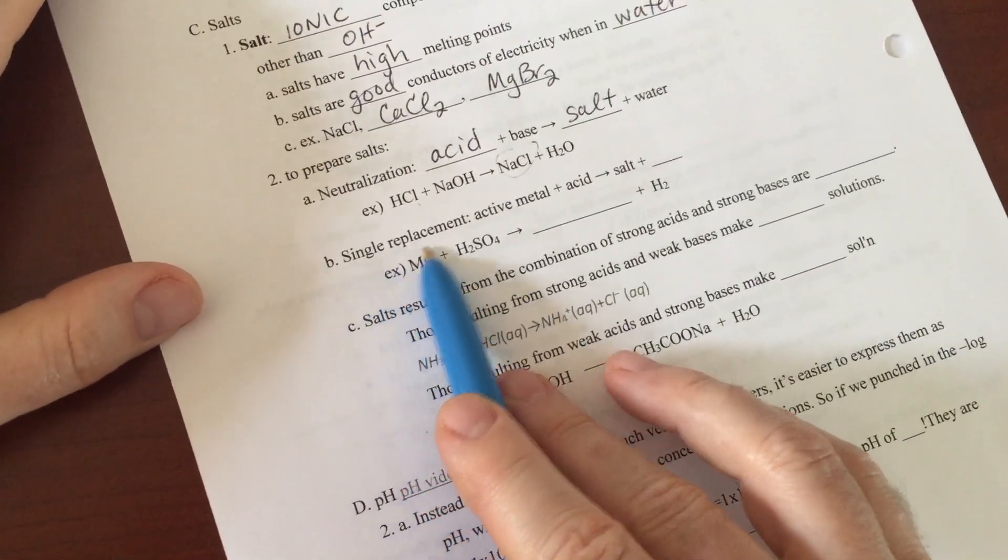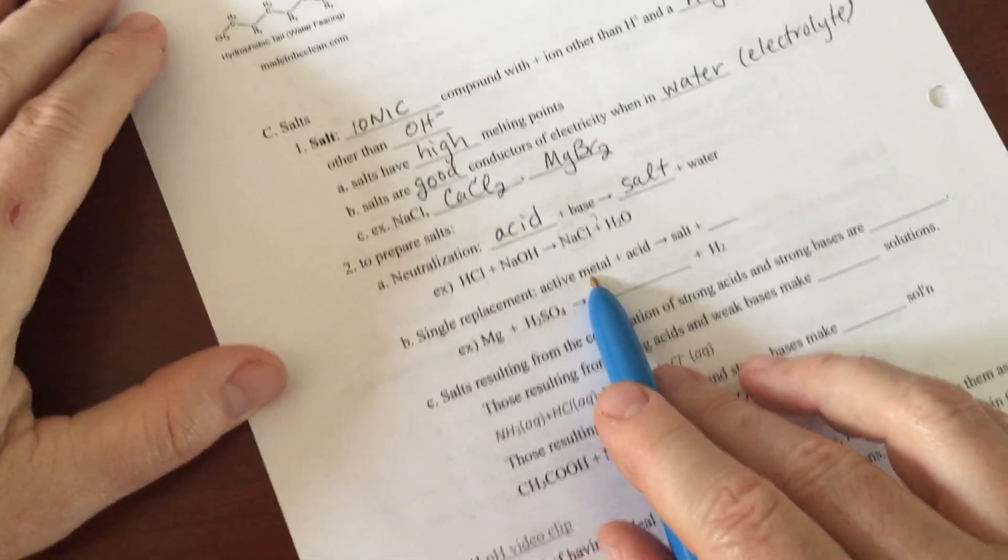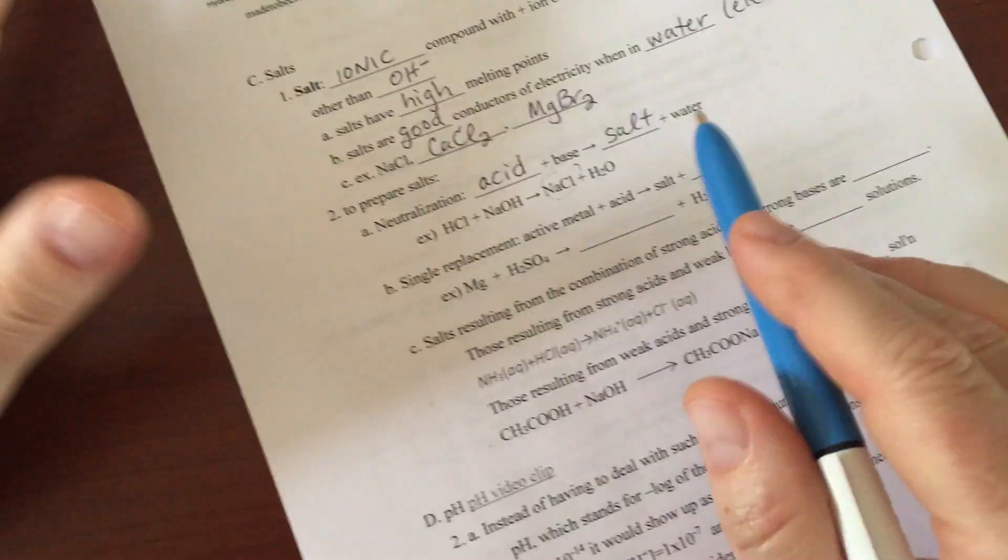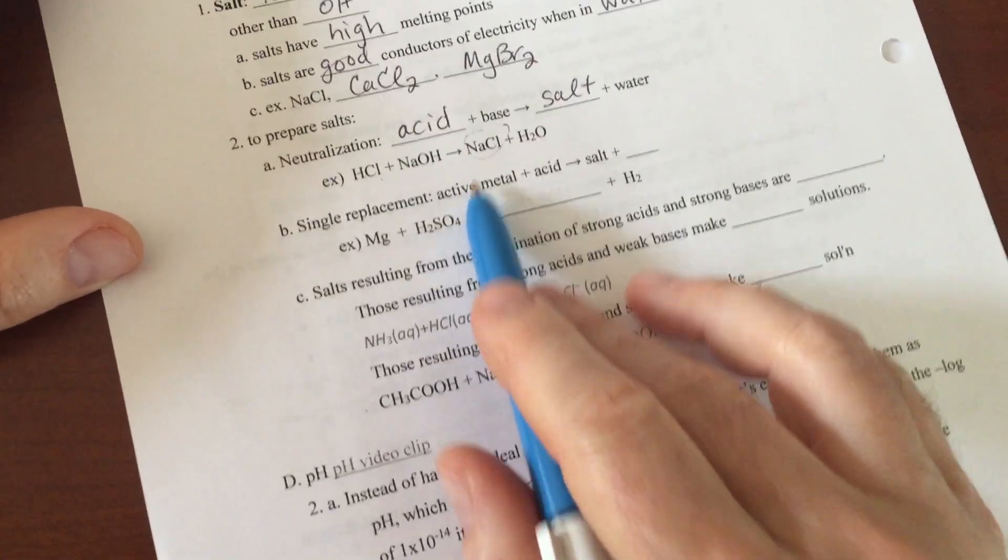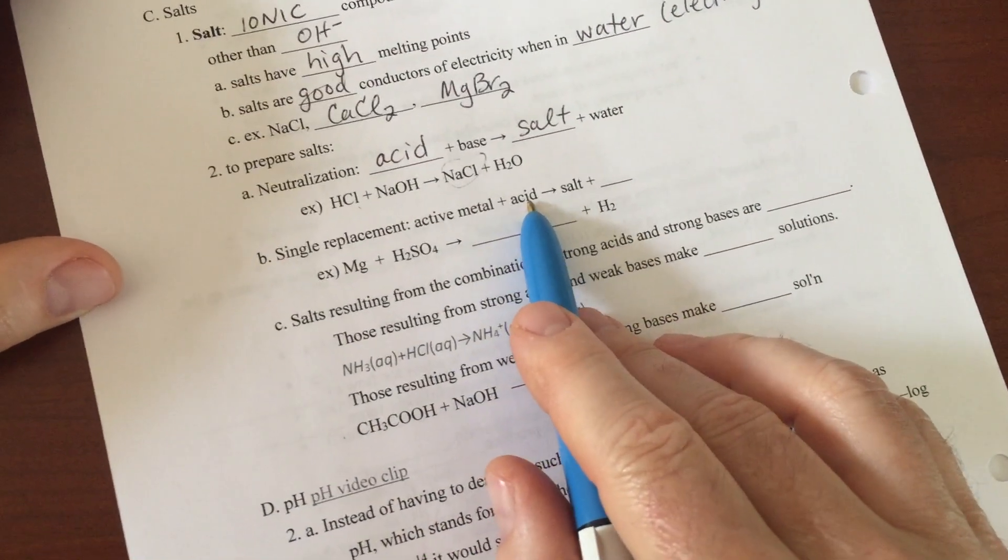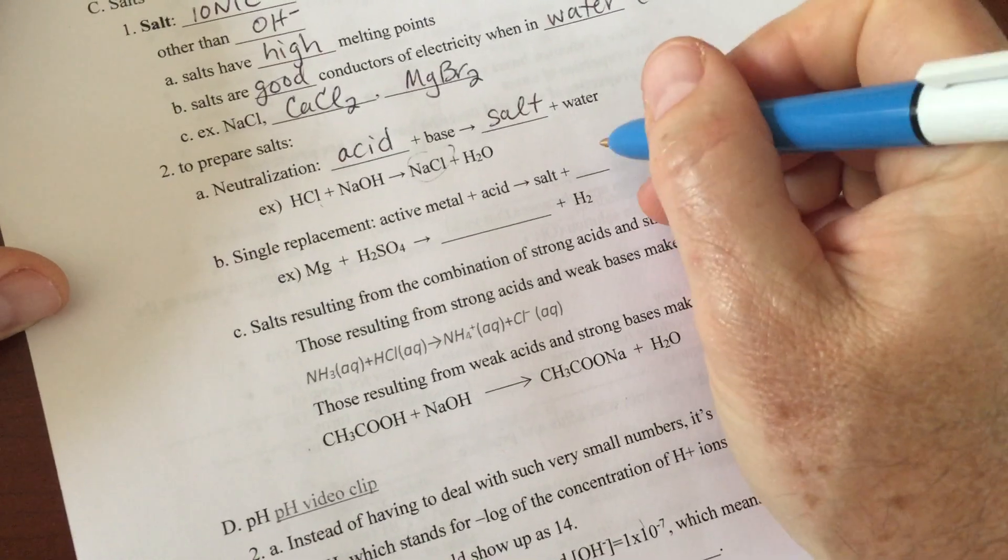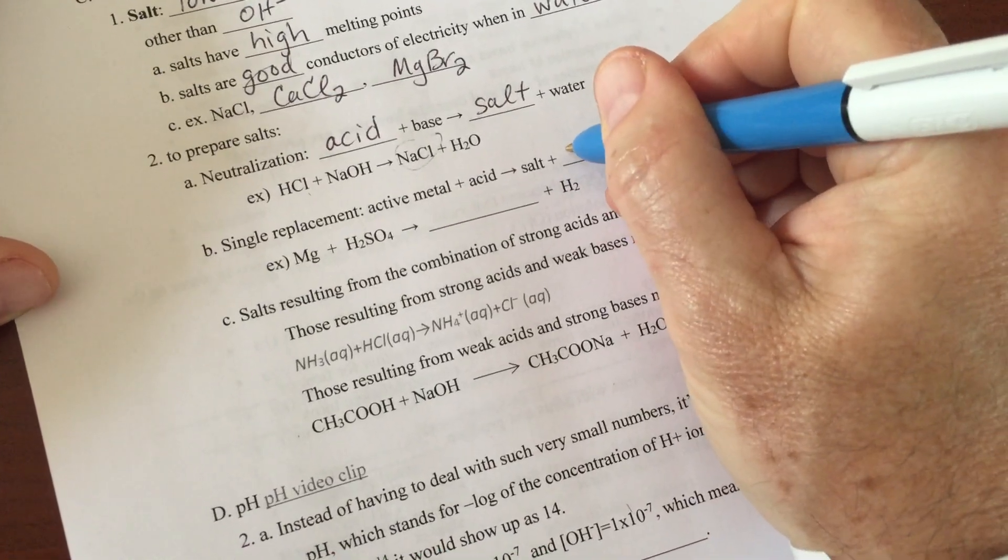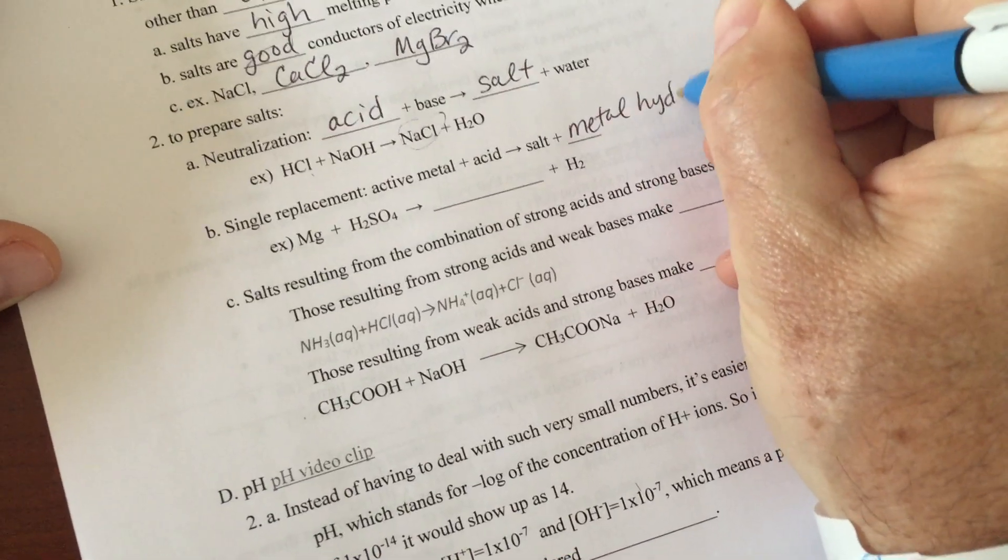You can also get salts from a single replacement reaction, so you've got an active metal like group 1, sodium, or beryllium, anything group 1 or group 2. You combine it with an acid and you get salt and you get a metal hydride, something called a metal hydride. You don't really have to worry about that too much though.